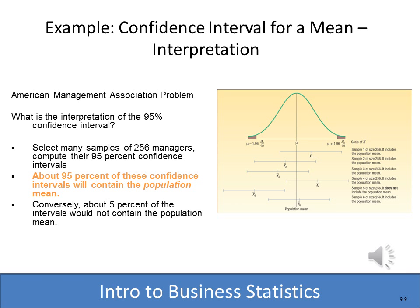The official interpretation: if we select many samples of 256 managers and compute their 95% confidence intervals, about 95% of those intervals will contain the real population mean, while about 5% will not. So we have a 95% confidence level that the actual population mean would be contained within that confidence interval.